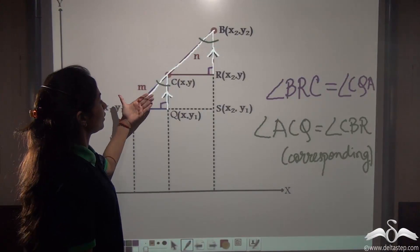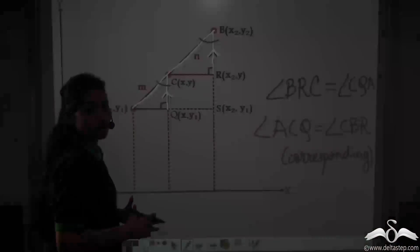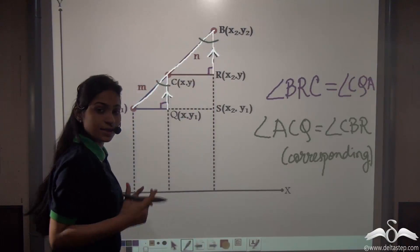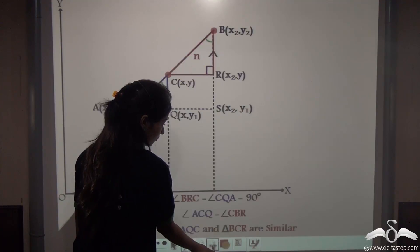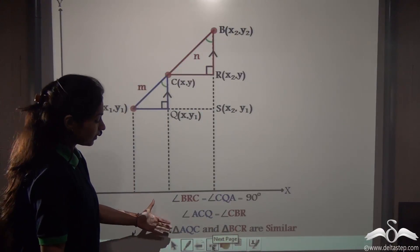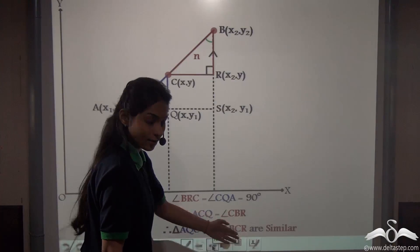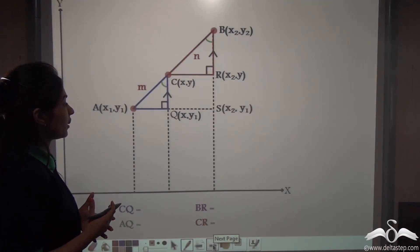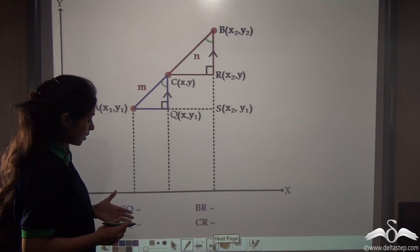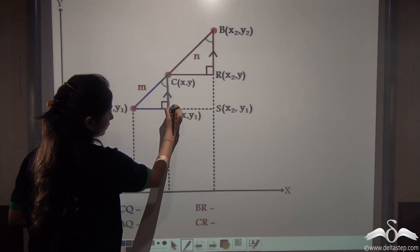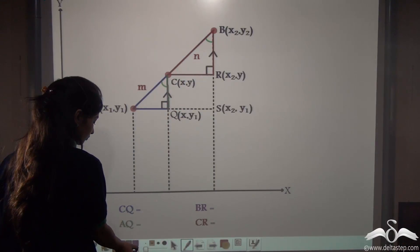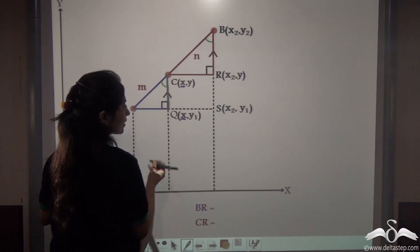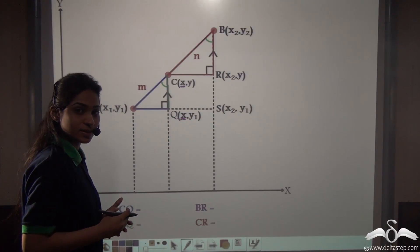We have found that in these two triangles two angles are equal, so we can say that triangle ACQ and triangle CBR are similar by the angle-angle axiom. Now let us find the sides of these two triangles. The distance CQ: since C and Q have the same x-coordinates, we subtract the y-coordinates to get CQ = y − y1.